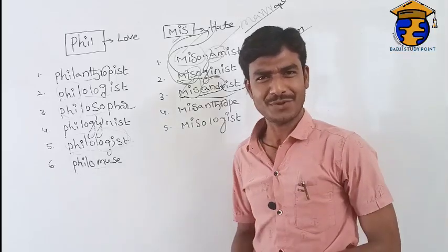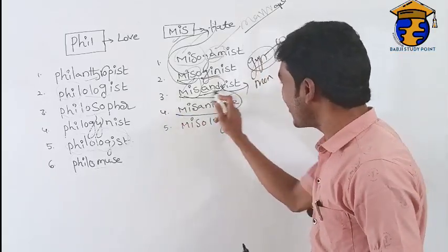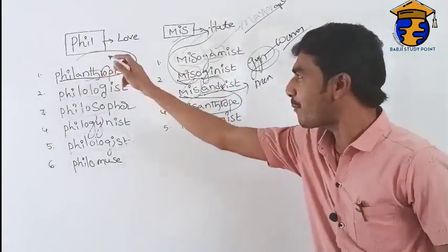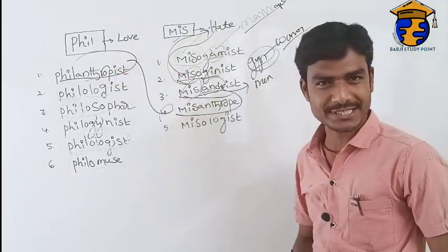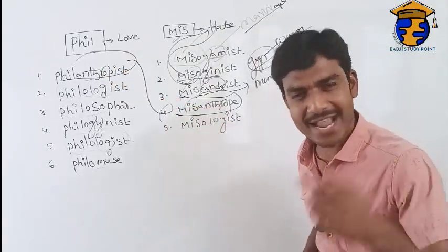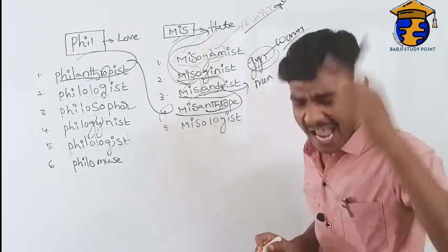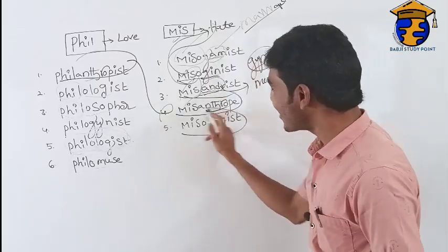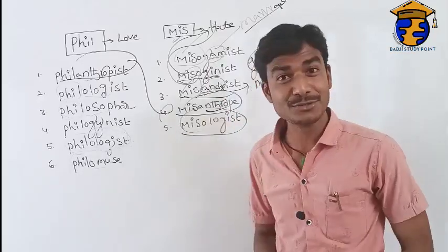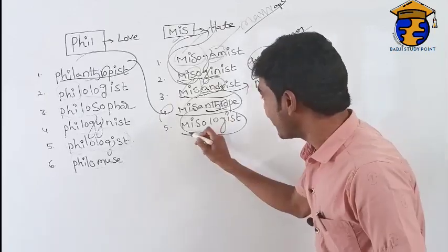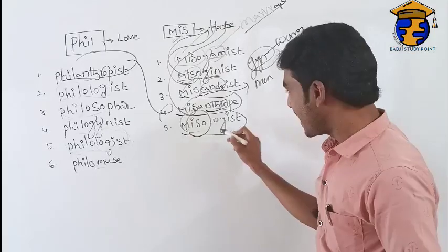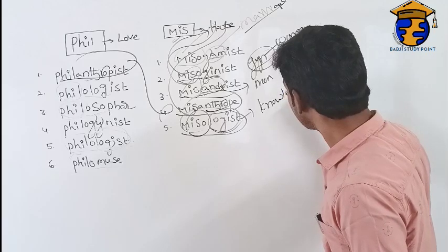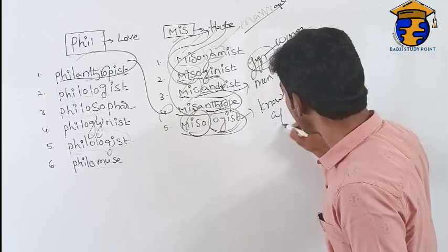The next word is 'misanthropy.' You can compare it with 'philanthropist' — they are opposites. 'Mis' means hate and 'anthro' means human, so hatred of mankind is called misanthropy. Next is 'misologist.' 'Mis' means hate and 'logos' means knowledge — a hater of knowledge and learning is called a misologist.